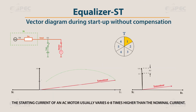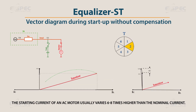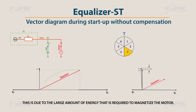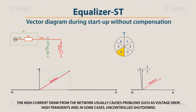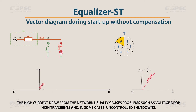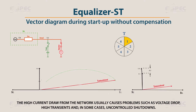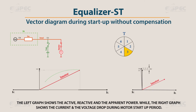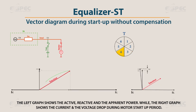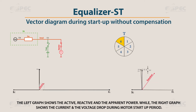The starting current of an AC motor usually varies 6 to 8 times higher than the nominal current, due to the large amount of energy required to magnetize the motor. The high current draw from the network usually causes problems such as voltage drop, high transients, and in some cases, uncontrolled shutdowns. The left graph shows the active, reactive, and apparent power, while the right graph shows the current and voltage drop during the motor startup period.